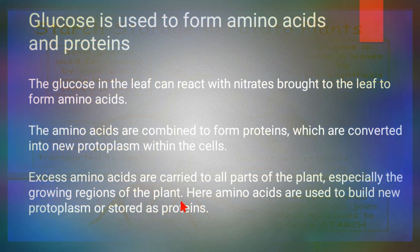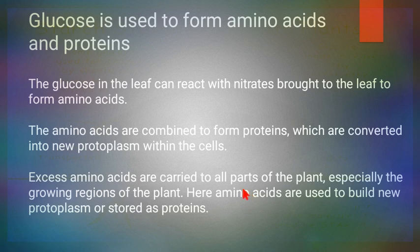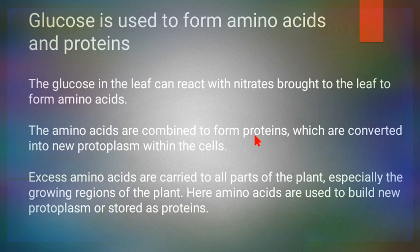Glucose is also used to form amino acids and proteins. Glucose is made up of carbon, hydrogen, and oxygen. Proteins are made up of amino acids, which in turn contain carbon, hydrogen, oxygen, and nitrogen. So glucose provides the carbon, hydrogen, and oxygen needed for amino acid and protein synthesis.